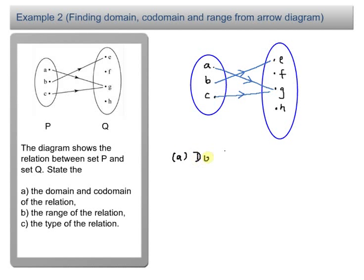For part A, we need to find the domain, very simple. Domain is actually the set P, this is set P, this is set Q. Domain equals the set of A, B, and C.